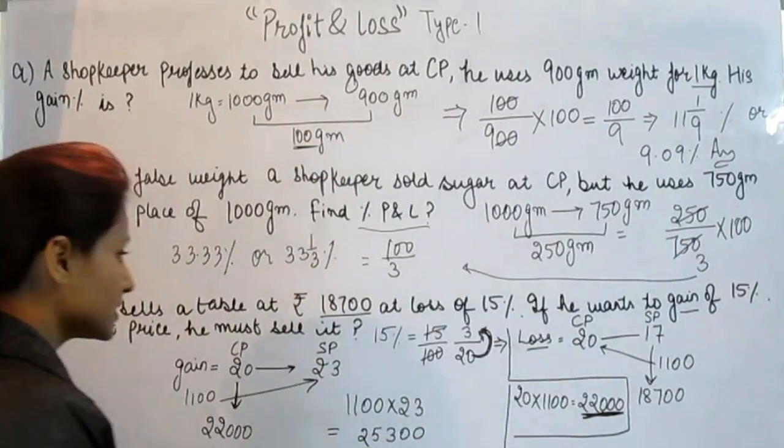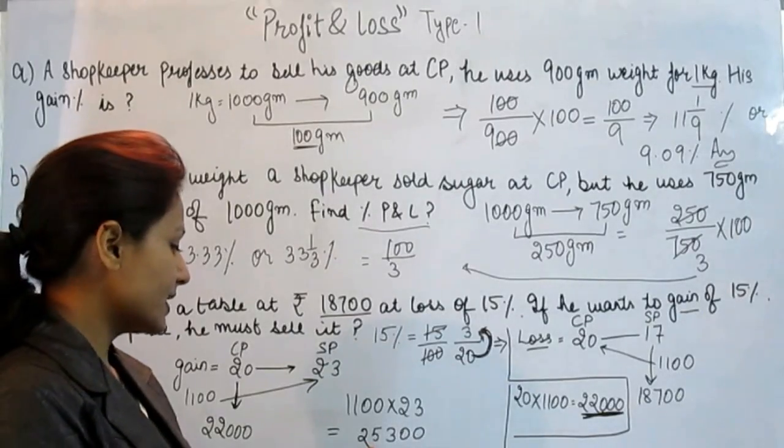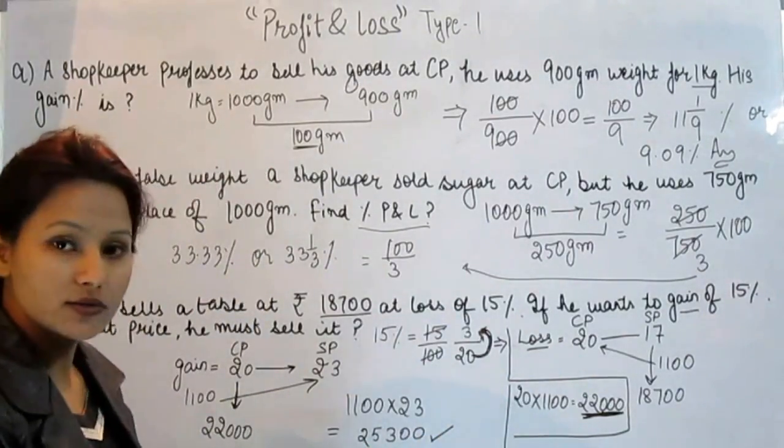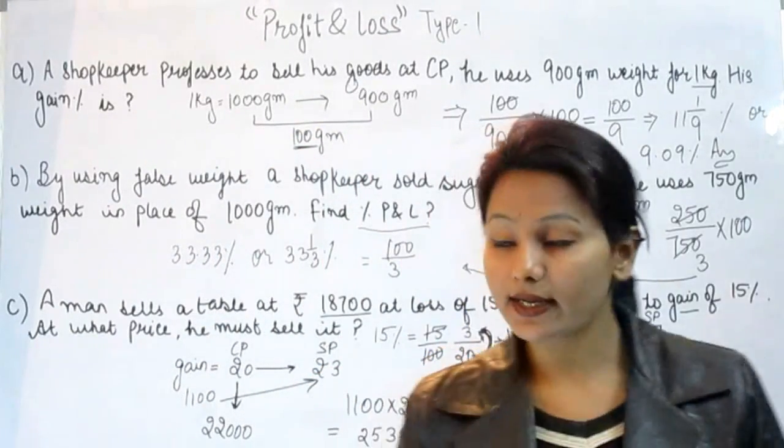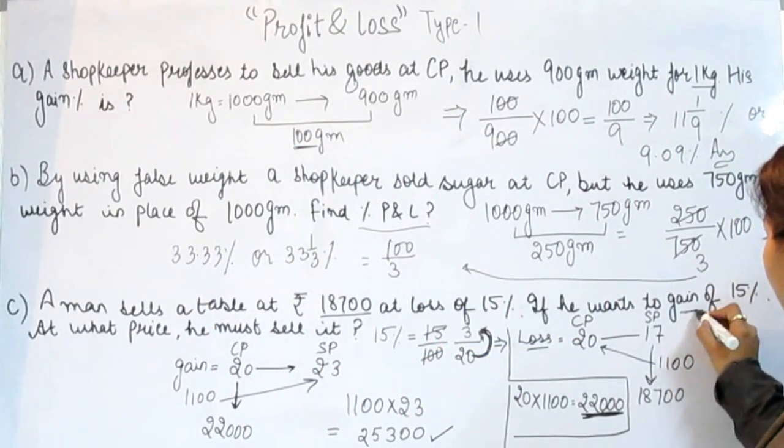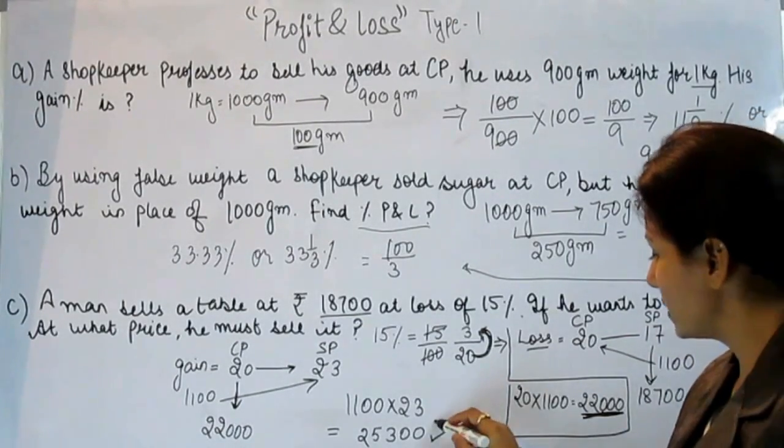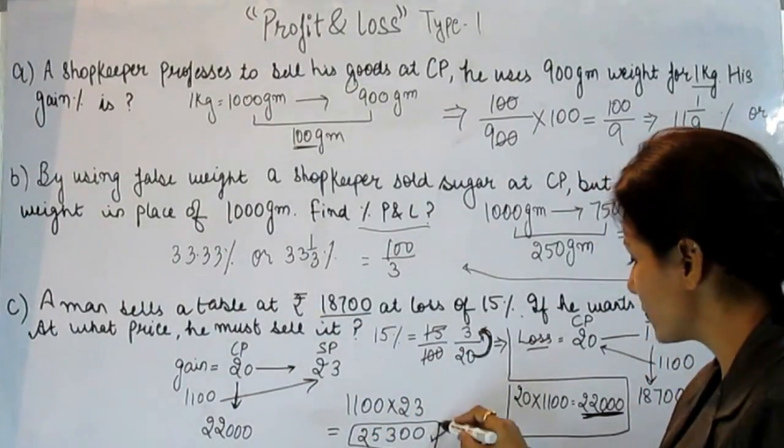It means, if he sells his table at rupees 25,300, he can get the gain of 15%. So this is the answer which we are looking for.